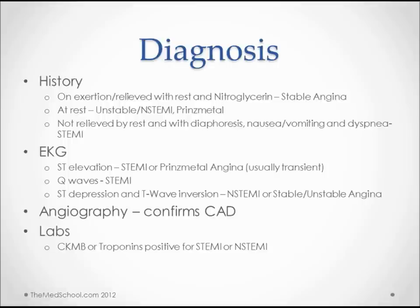The confirmatory diagnostic technique is angiography. If we have an abnormal EKG and we suspect the diagnosis of coronary artery disease, then we're probably going to get an angiogram. Labs are used to help us rule out actual damage to the heart.